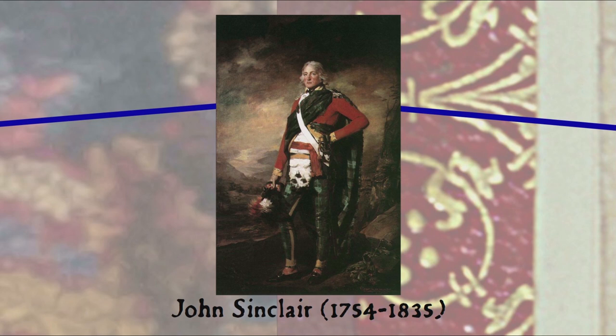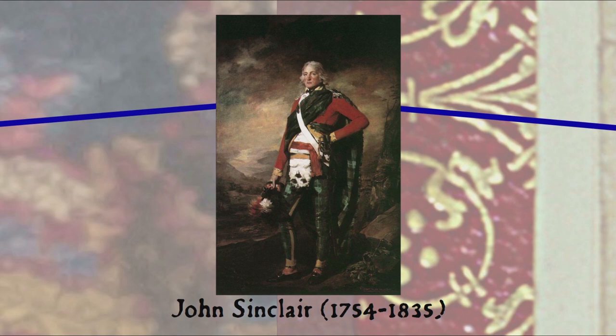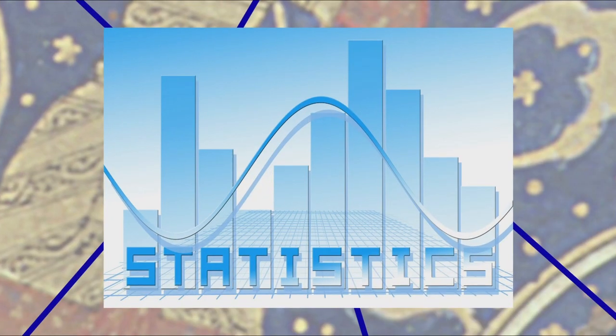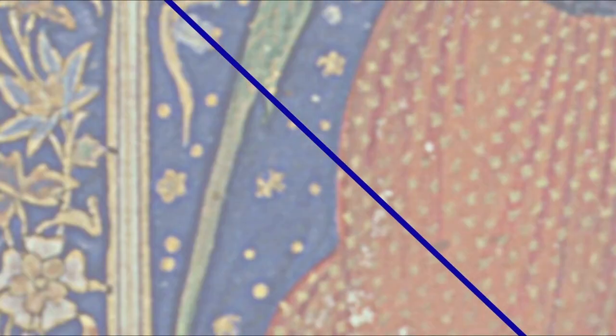In his words: 'an inquiry into the state of a country for the purpose of ascertaining the quantum of happiness enjoyed by its inhabitants, and the means of its future improvement.' So the data was still not specifically numerical, but by 1829 the word had further narrowed in sense to numerical data collected and classified, and no longer referred specifically to data about the state. But for the advancement of numerical statistics, and specifically leading to the use of statistics in life insurance, we turn to Sinclair's earlier fellow Scotsman John Arbuthnot.